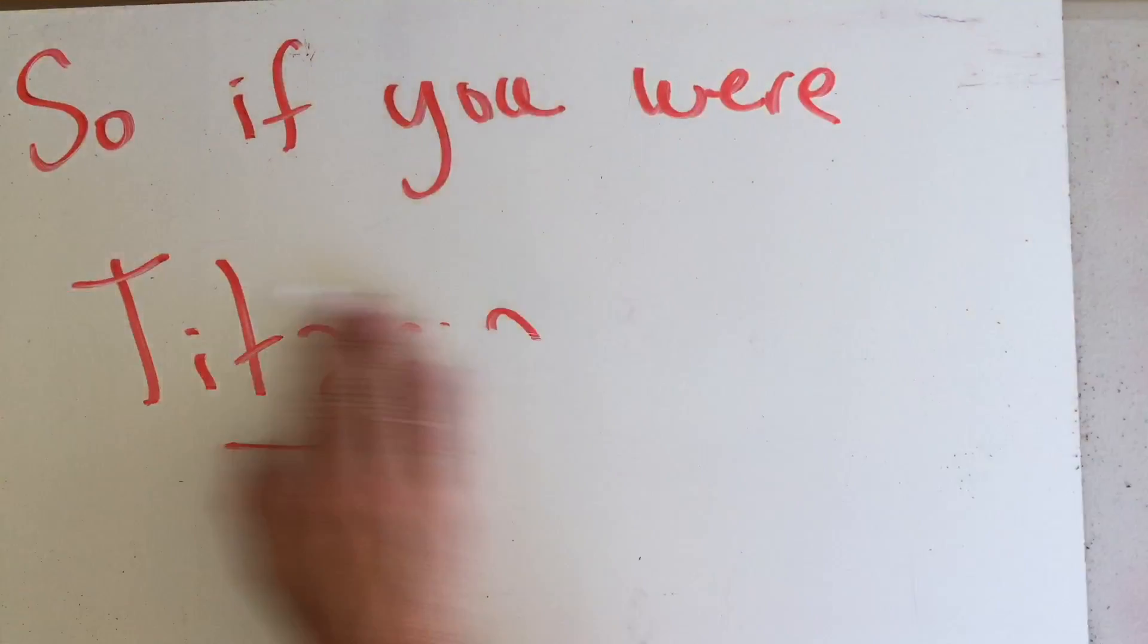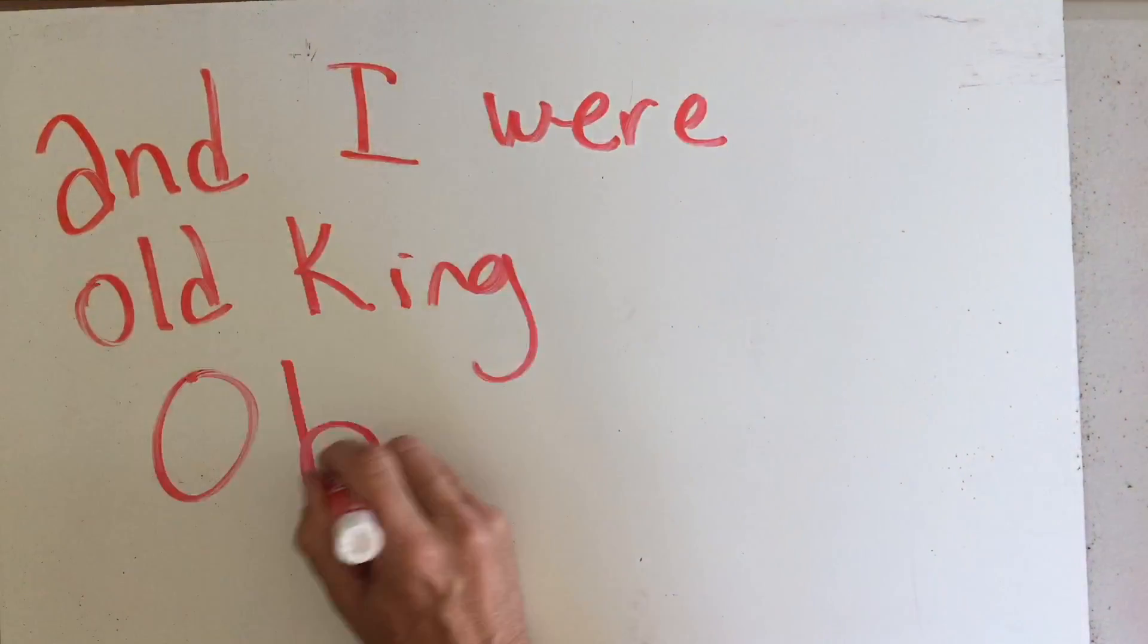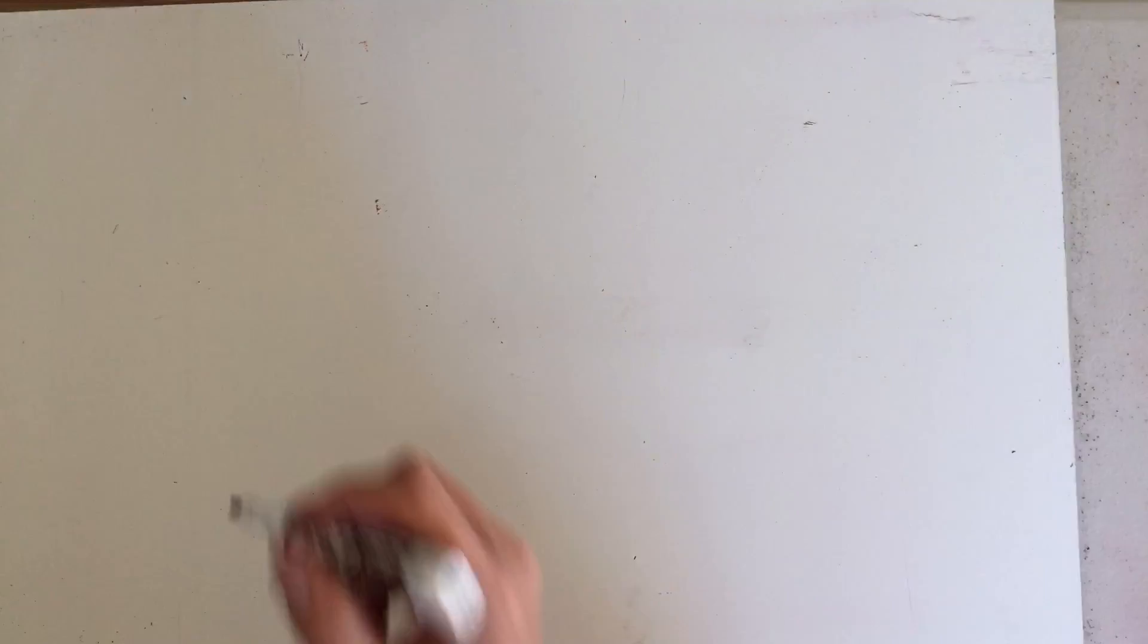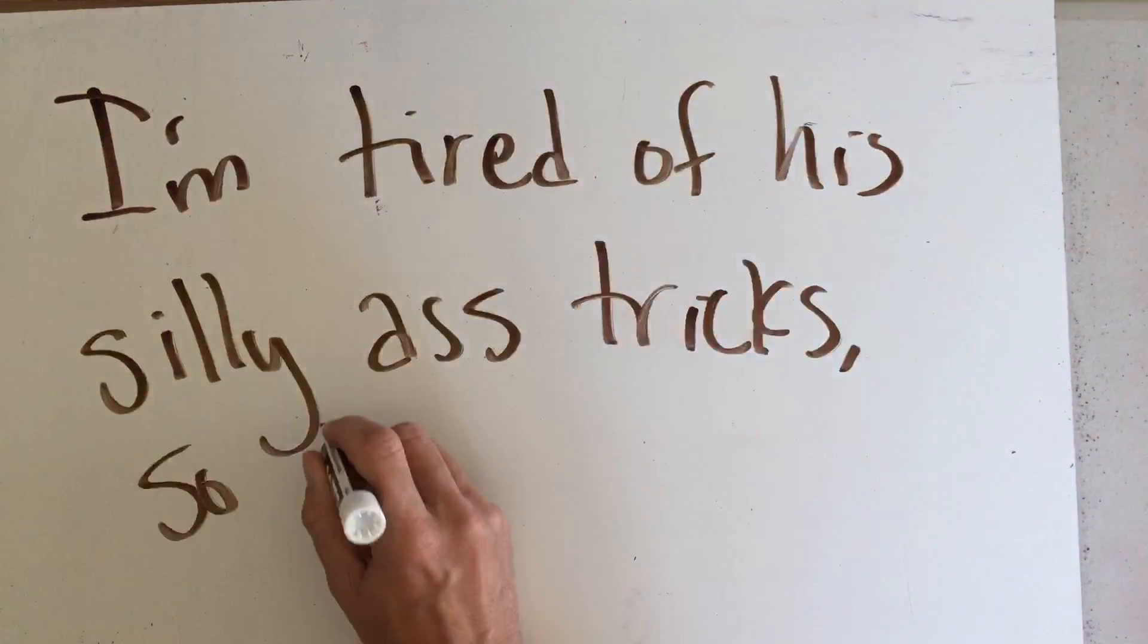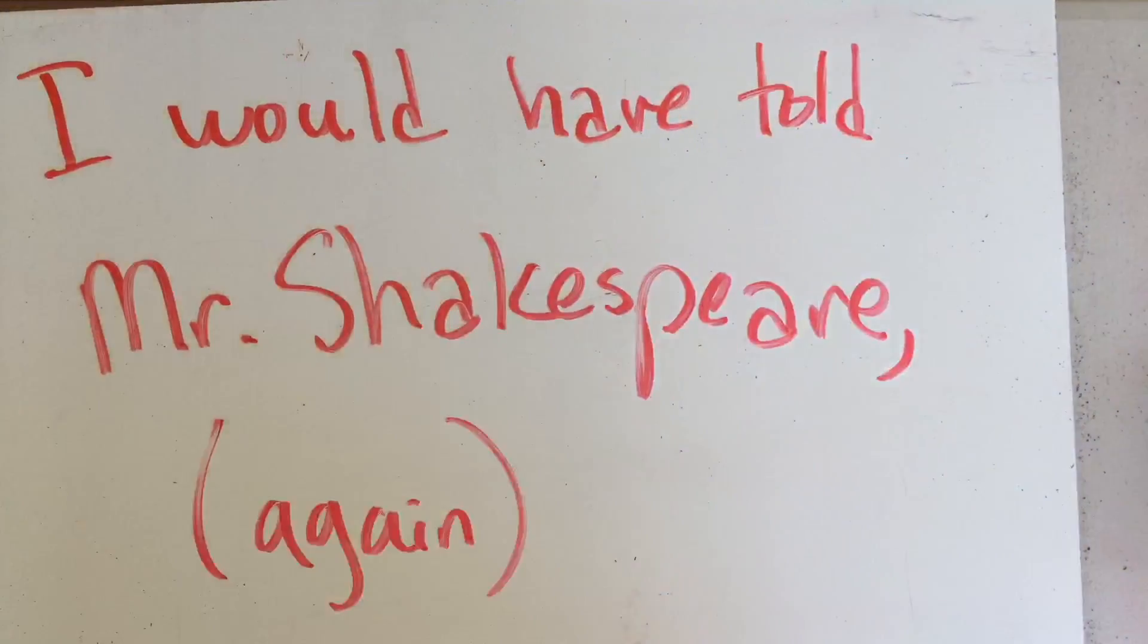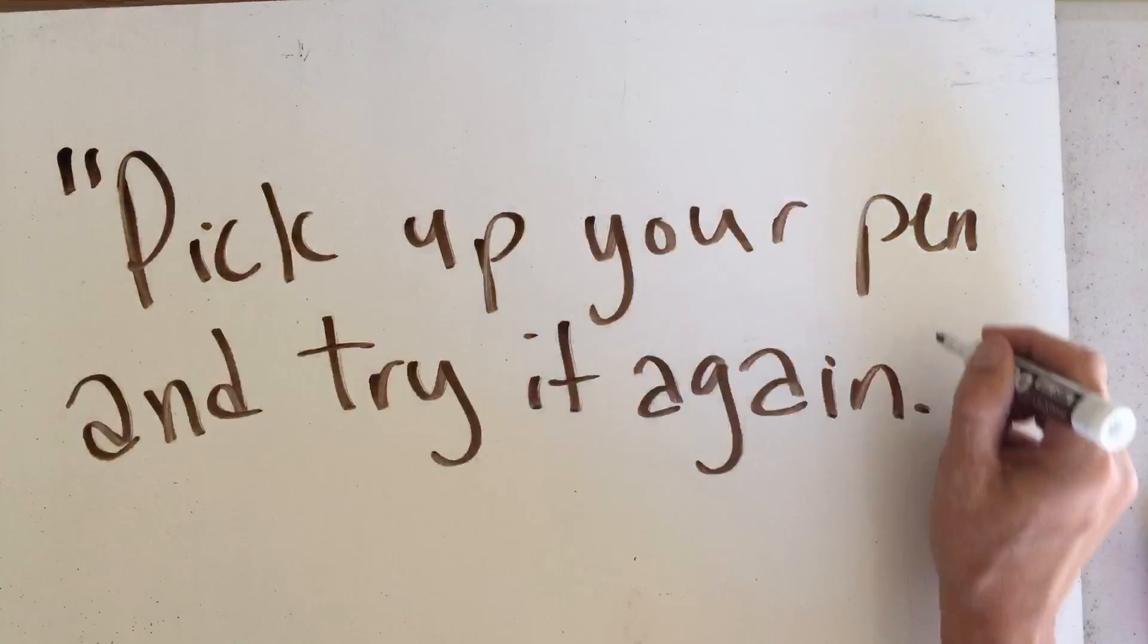So if you were Titania and I were King Oberon, would've said get the puck out of here because I'm tired of a silly ass trick so be gone. Would've told Mr. Shakespeare, gonna need a rewrite. Pick up your pen and try it again.